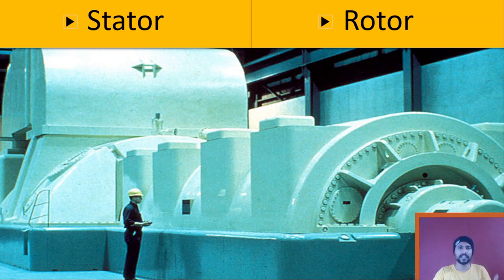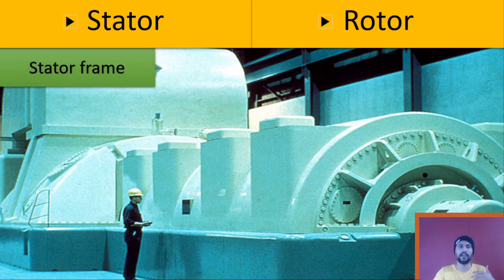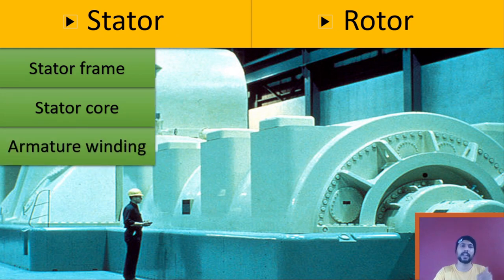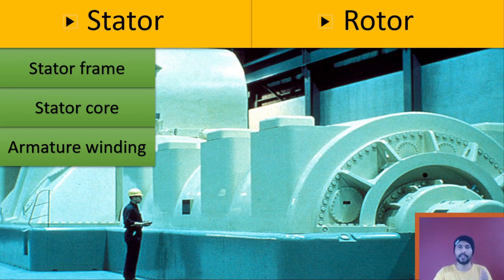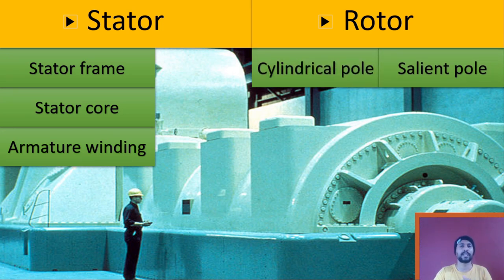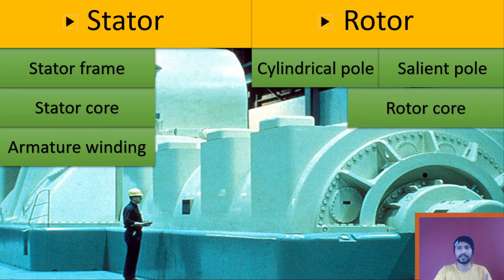The stator is basically constructed of a stator frame, stator core, and armature winding. If we talk about the rotor, there are mainly two types: the first is the salient pole type rotor and the other is the cylindrical pole type rotor. The construction of the rotor is divided into two parts: the rotor core and the rotor winding.